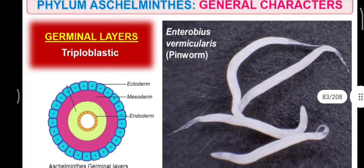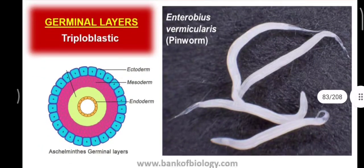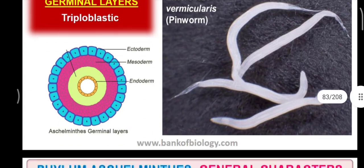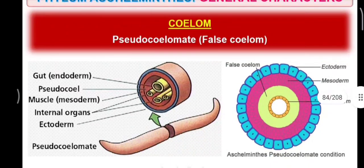Regarding germ layers, these are triploblastic organisms, like Platyhelminthes, which have three germ layers: the ectoderm, mesoderm, and endoderm. This picture shows Enterobius vermicularis, which is called the pinworm.